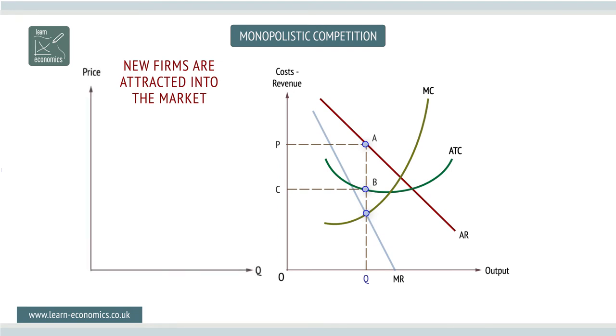In the short run, the firm can exploit its position by making supernormal profits. Supernormal profits will be maximized at the output where marginal revenue equals marginal cost. But excessive profit is not sustainable in the long run.